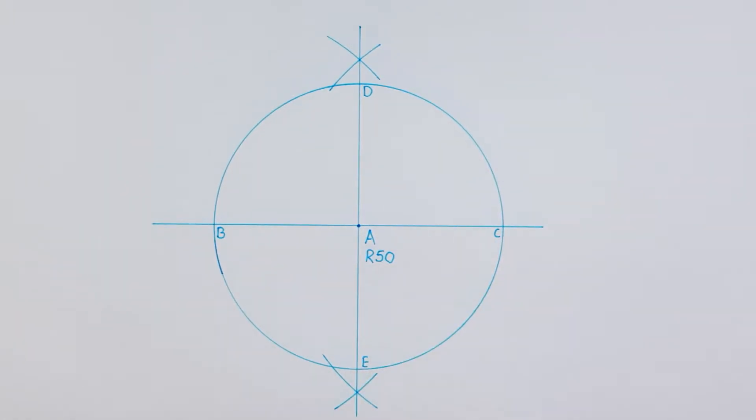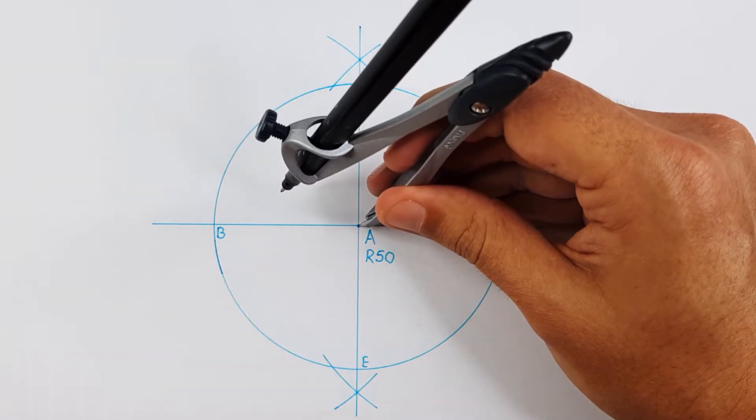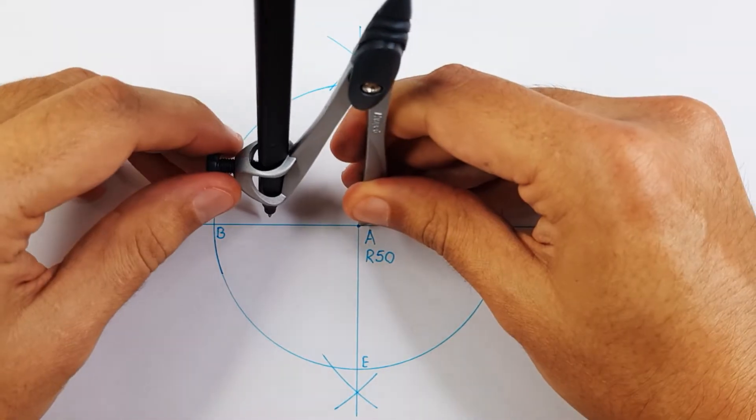Your next step is to determine the middle point between point A and B. Take your compass and apply the middle point method.